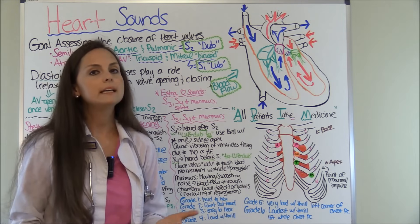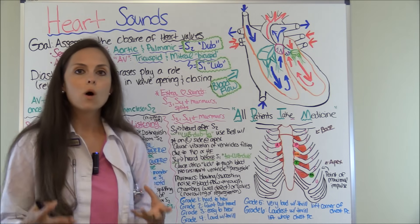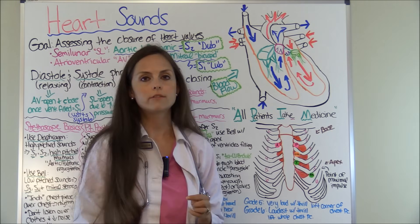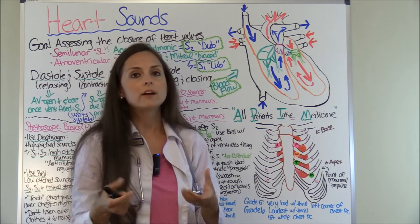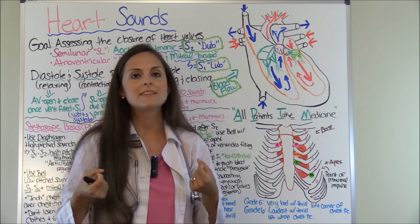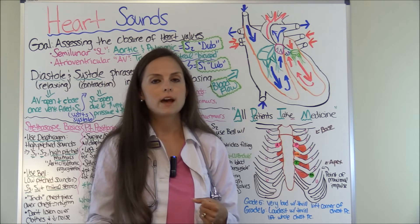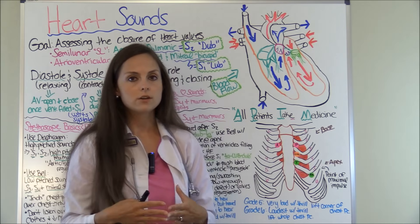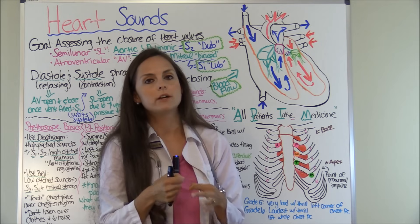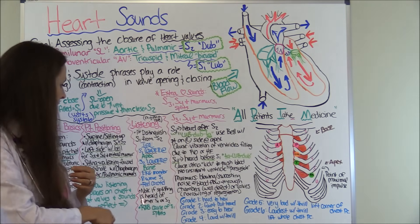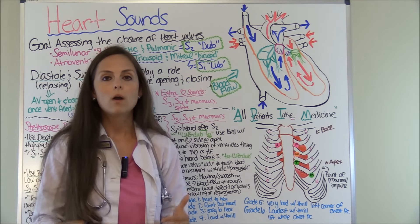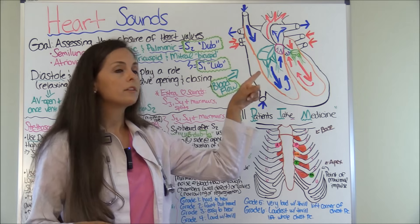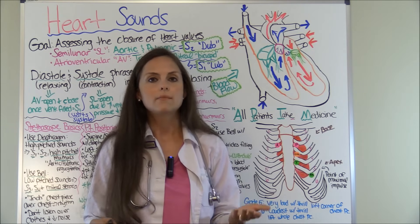A patient can also have splitting of S1 and S2. The AV valves — tricuspid and bicuspid — normally close at the same time, but with a split, one closes before the other. This can also happen with S2, where the semilunar valves — aortic and pulmonic — close at slightly different times. A typical cause of split S1 could be a right bundle branch block, where the right bundle is being blocked through the electrical conduction system.